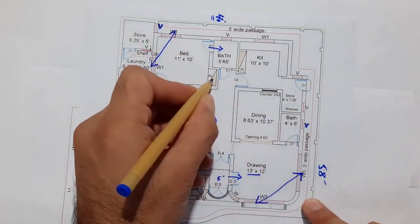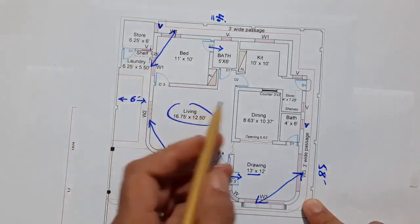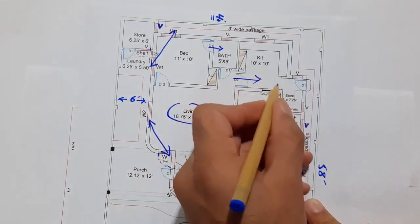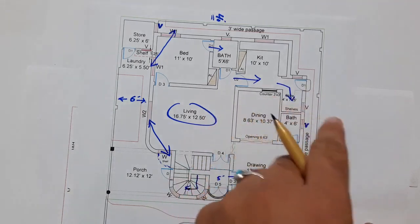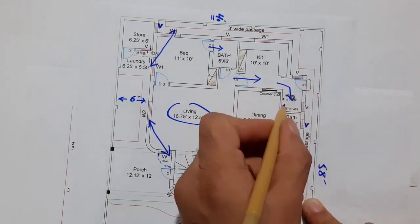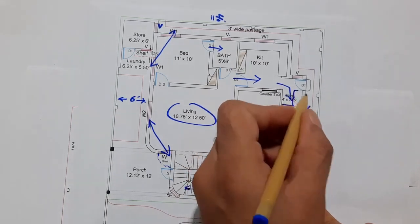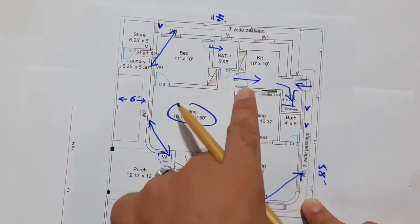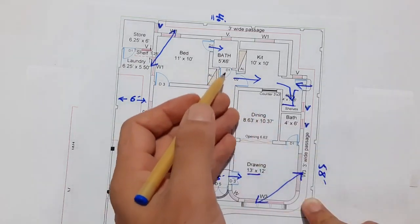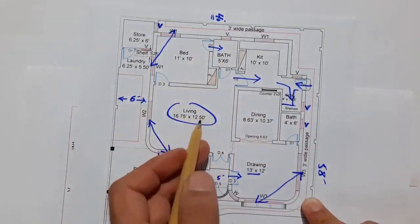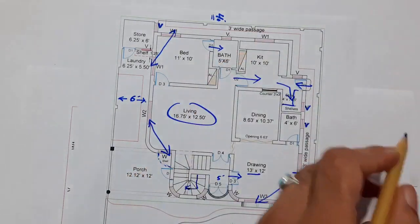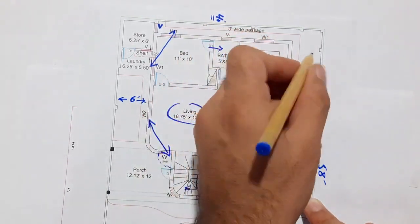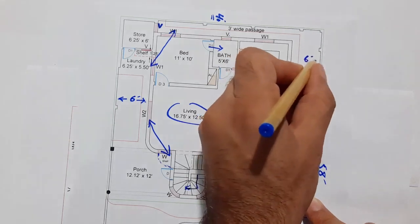There is also a wardrobe here. The kitchen size is 10 by 10 feet. With the kitchen there is a store of four feet by seven feet three inches, and a shelf. Ventilation also comes from the open gallery. There is a door for the kitchen and another door. The bath has two doors — one from the bedroom side and one from the living room. There is open space of six feet.